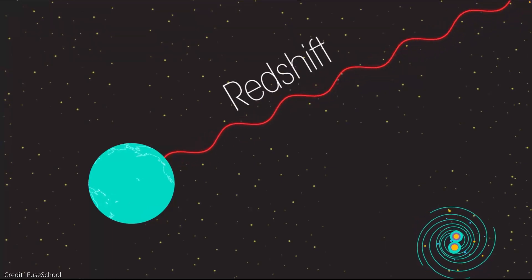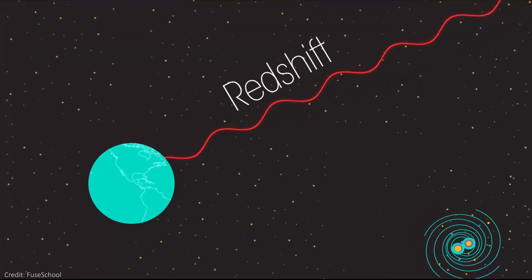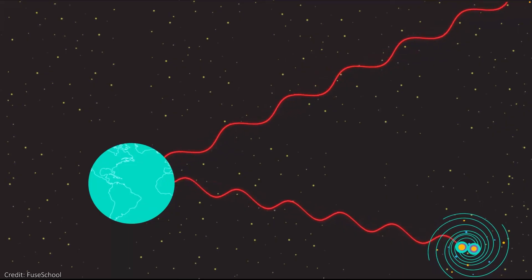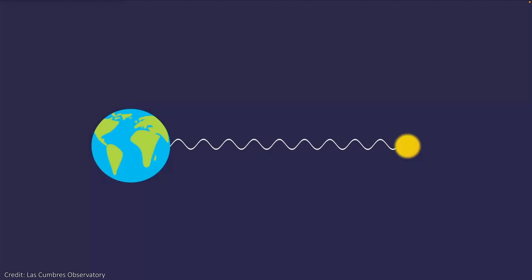Measuring the difference between where that line should be and where we actually see it gives us what we simply call the redshift of that object. And it tells us not only that it is moving away from us, but it's a measure of how fast it's moving away from us too. Similarly, if the object is moving towards us, the wavelengths shift to shorter or bluer wavelengths, and we'd say that that object is blueshifted. Again, the amount that the wavelengths are shifted tells us how fast that object is moving.